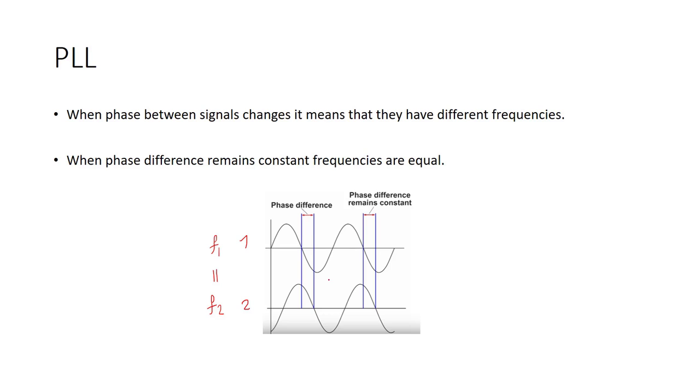So here imagine that we have the VCO signal and we have a reference signal. The VCO phase is changing and it's not stable. So the phase difference between two signals is changing.